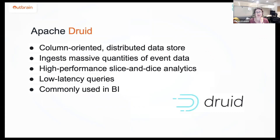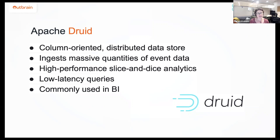Apache Druid is a column-oriented distributed data store. It enables the ingestion of high volumes of event data, it gets high performance of slice and dice analytics, and it supports low latency queries. This tool is actually very commonly used in BI.